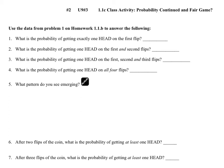On the homework we made a little chart for figuring out how many heads, or how many not-heads, were possible when flipping a coin — specifically four times. For example, number one: what is the probability of getting exactly one head on the first flip? This one is just about the first flip, and the answer is one-half, or 50%.